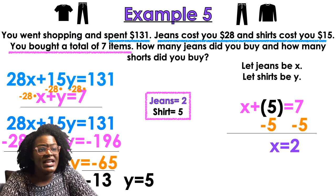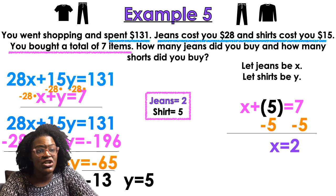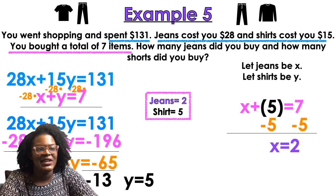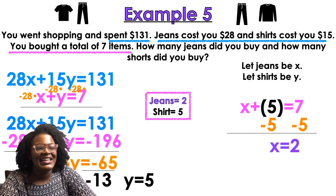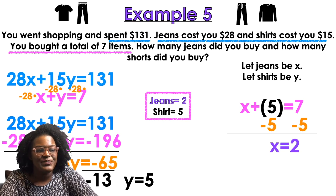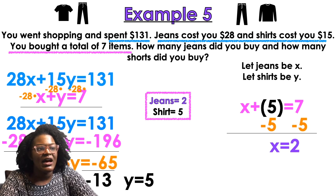Plug y = 5 into x + y = 7: x + 5 = 7, so x equals 2. Jeans were X and shirts were Y — so I bought two pairs of jeans and five shirts.